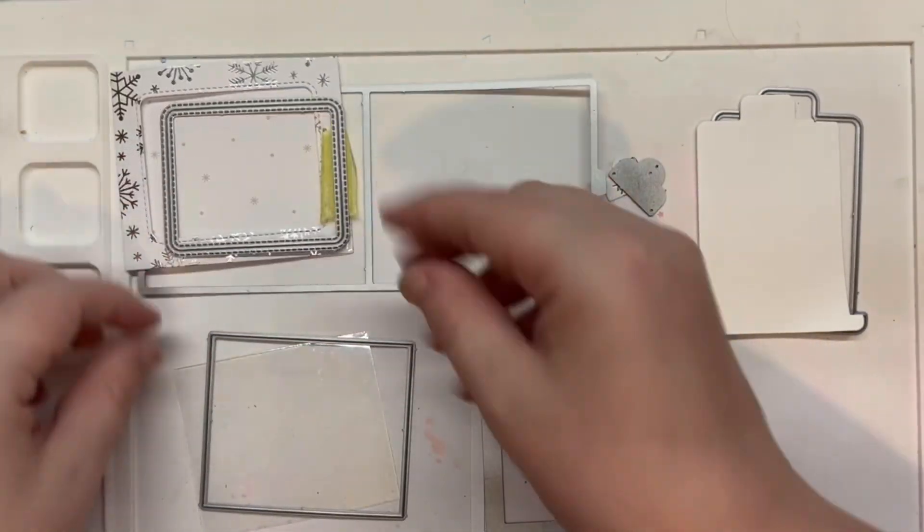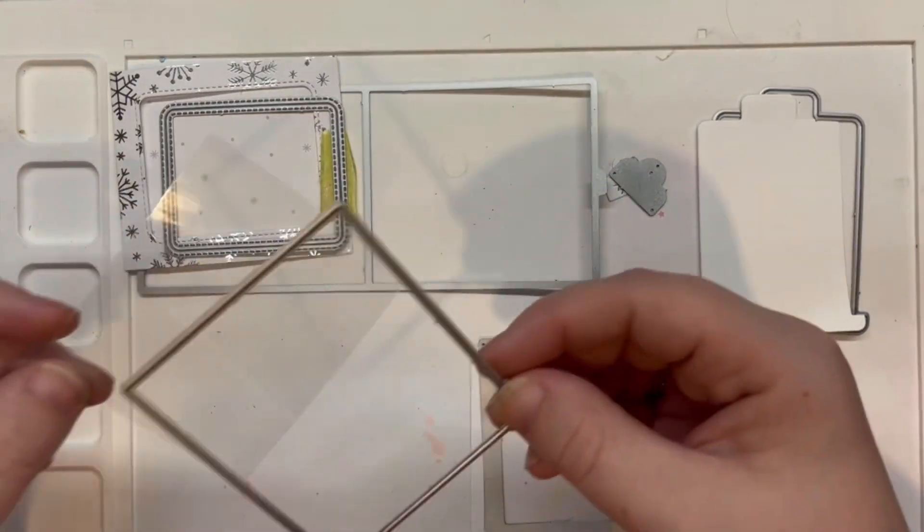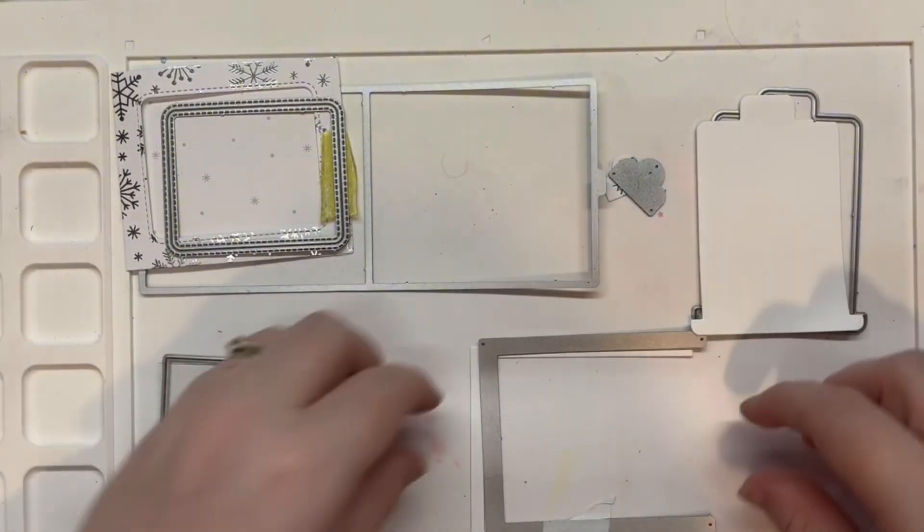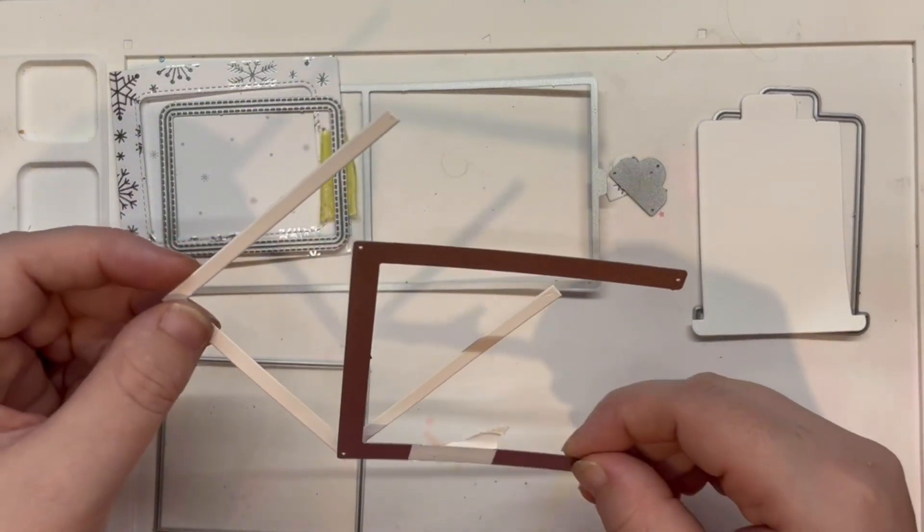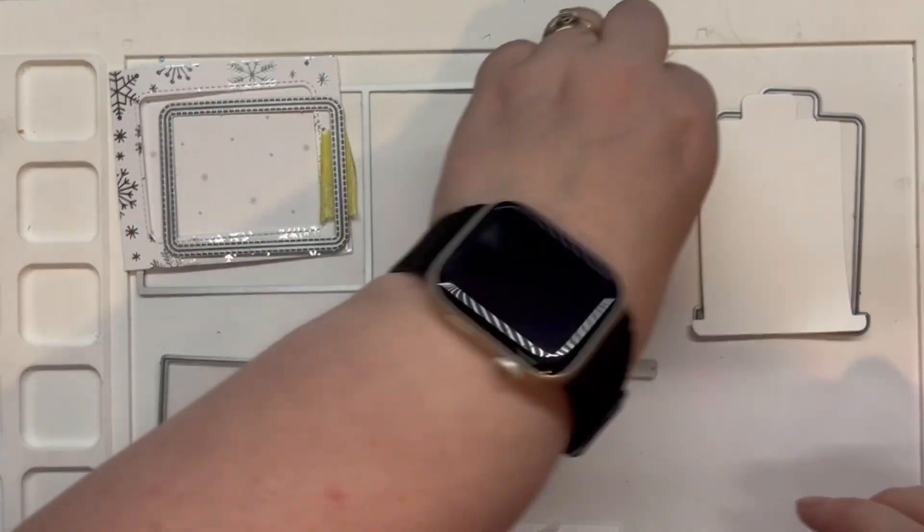I started this card by die cutting the pieces I needed to build the color slider. I lay these out and in the background I have the Lawn Fawn tutorial for how to build this kind of card. This will be linked in the description below.